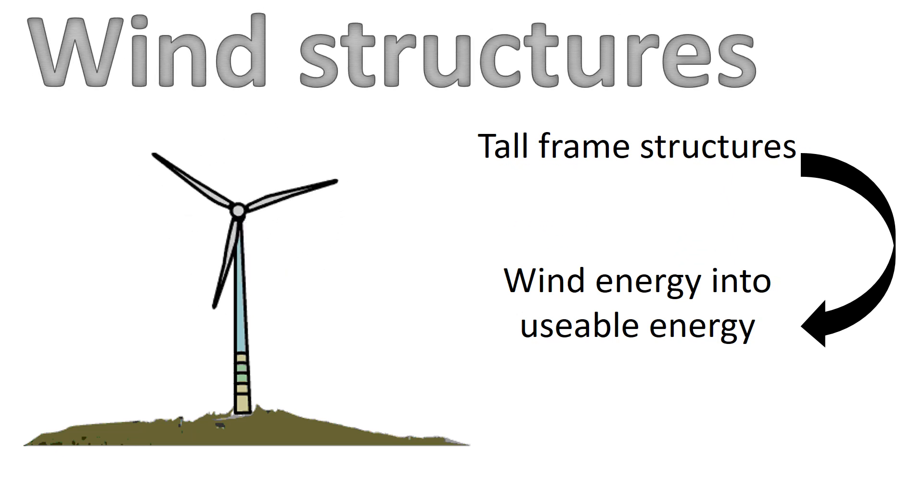Wind structures are tall frame structures that convert wind energy into usable energy. The wind turns the blades which operate a machine that can be used to grind grains into flour, like a windmill, pump water from an underground water source, a wind pump, or generate electricity, a wind generator.